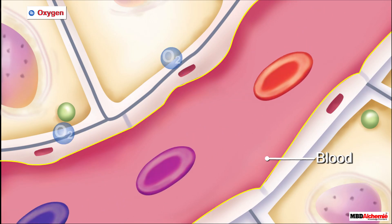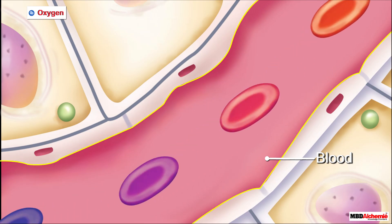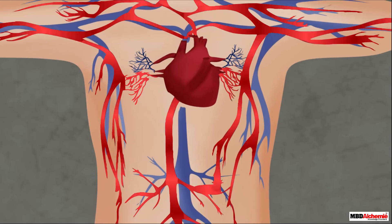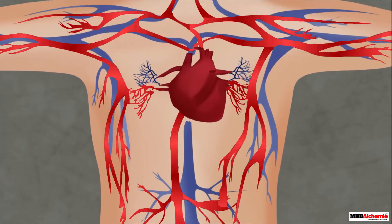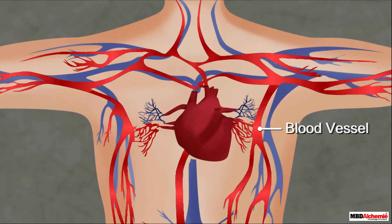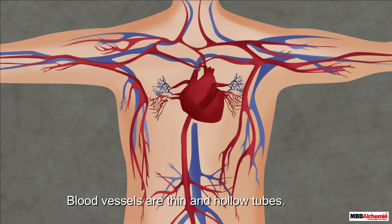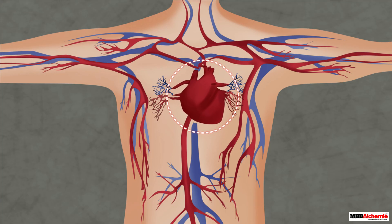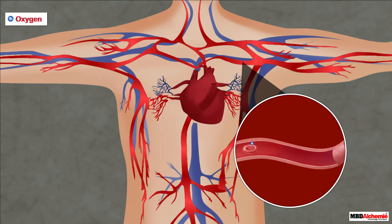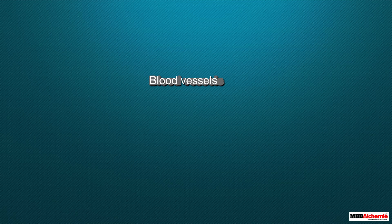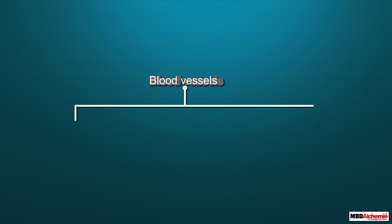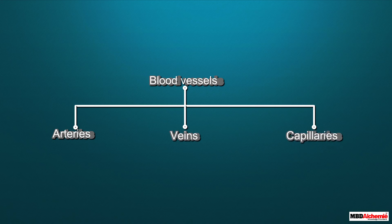You can see that blood is moving through tunnel-like structures, which act as roads for the blood. Such tunnel-like structures are present throughout the body and help the blood move. These tunnel-like structures are called blood vessels. Blood vessels are thin and hollow tubes that connect the main pumping organ of the body — the heart — to the rest of the body. Their function is to provide a pathway for blood to move around the body. Based on the direction in which they carry blood, blood vessels are categorized into three types: arteries, veins, and capillaries.